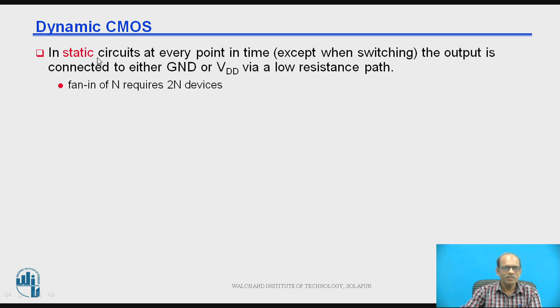In Static CMOS Circuits, at every point in time the output is connected either to ground or VDD via low resistance path. Fan-in of N requires 2N devices in the static circuits.